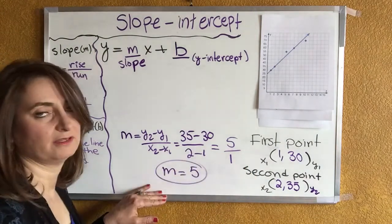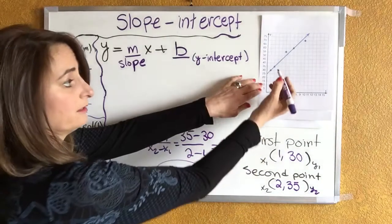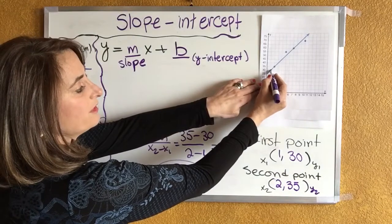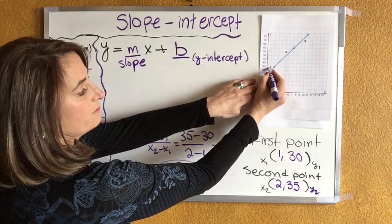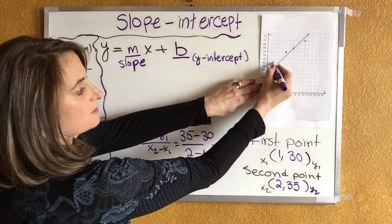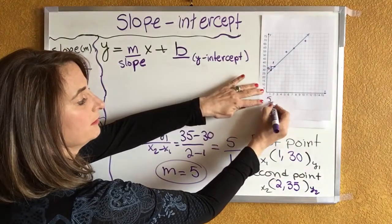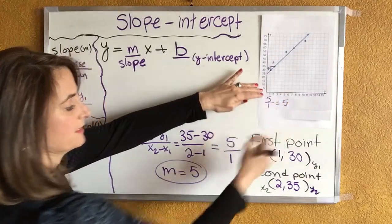There you go, I found the slope from two points. What if I want to do the rise over run? Then you go up from 30 to 35 and that gives you a 5, and then run from 1 to 2 and that's 1, so the slope is 5 over 1 which is 5, and that's exactly what you found.